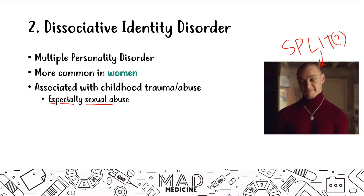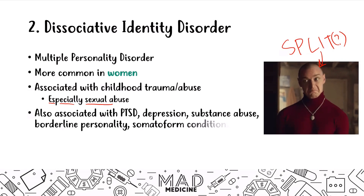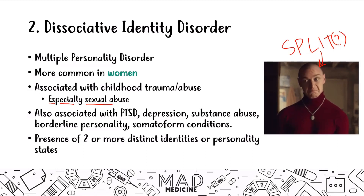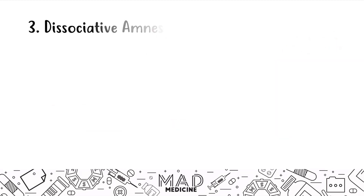The disorder starts after the abuse, and a lot of times it's a way for a patient to cope with what happened — to internalize it but also manage the feelings they experience. They dissociate their identity and kind of become a different person. This disorder is also associated with PTSD, depression, substance abuse, borderline personality disorder, and somatoform conditions. The presence of two or more distinct identities or personality states is the key hallmark for diagnosing dissociative identity disorder — and those identities must be clearly distinct from one another.